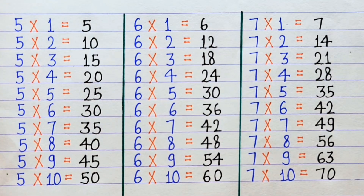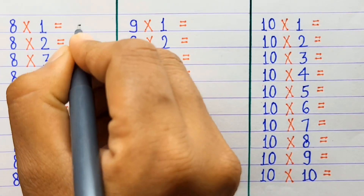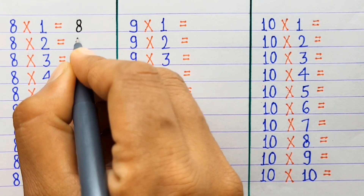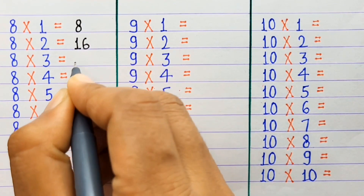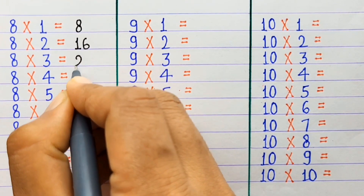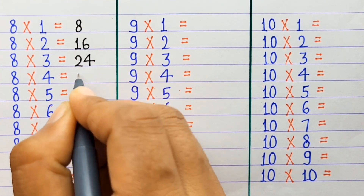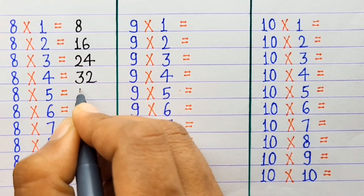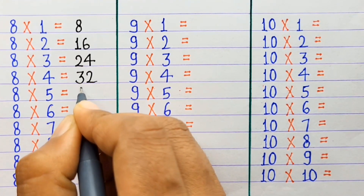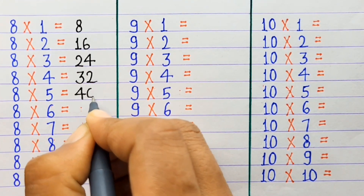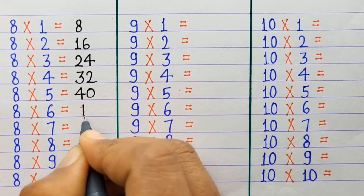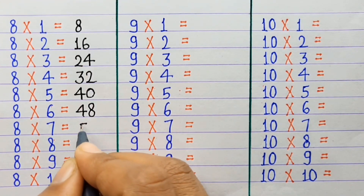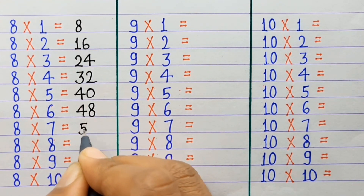8×1=8, 8×2=16, 8×3=24, 8×4=32, 8×5=40, 8×6=48, 8×7=56.